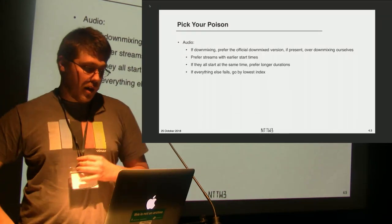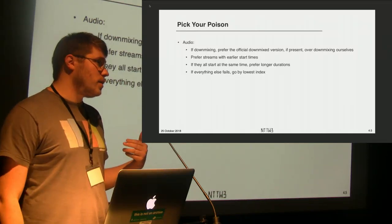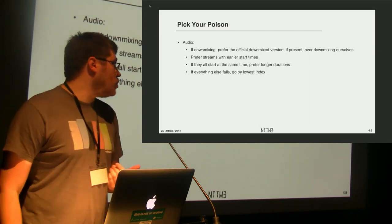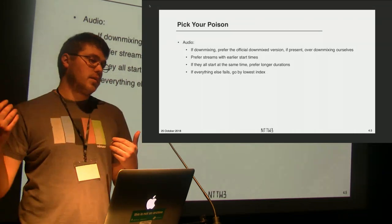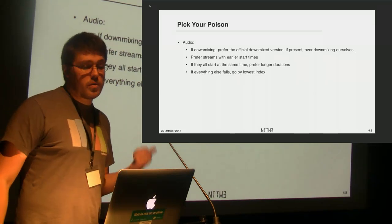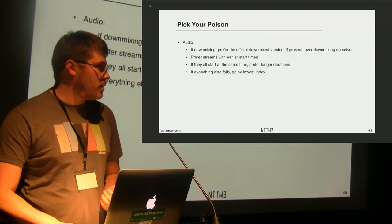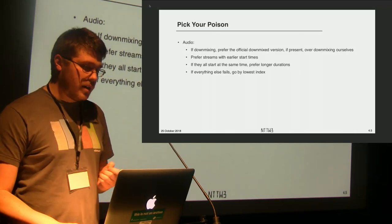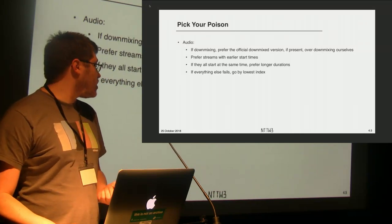Same for audio — if there are multiple audio tracks, we want to pick the official studio downmixed one. If there's a spec like iTunes, great. But you want to bias toward using the studio version: if the source carries both 5.1 and 2.0, use the studio version — don't do your own downmixing. Prefer streams with earlier start times, and try to prefer longer durations that match your video duration.